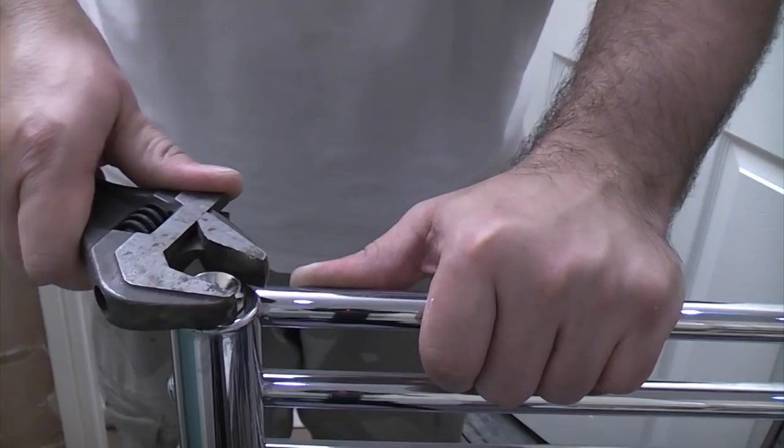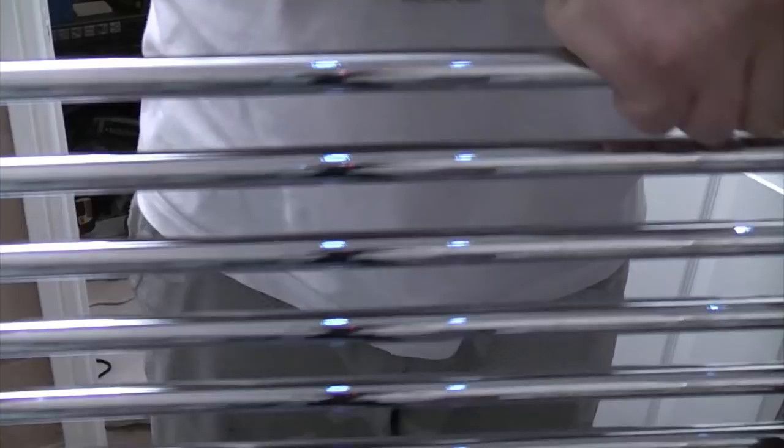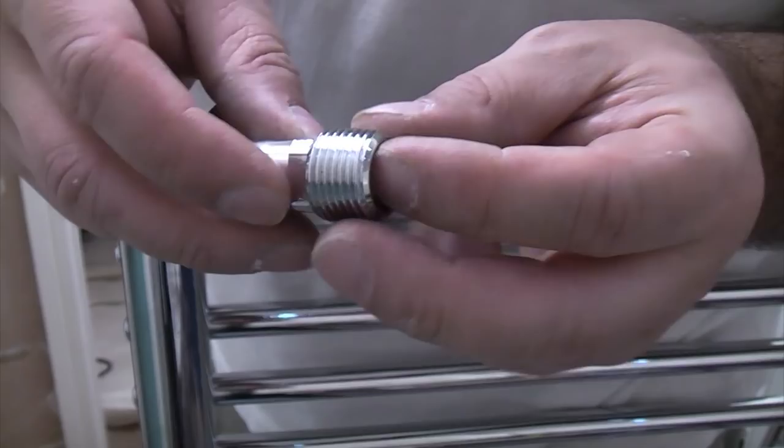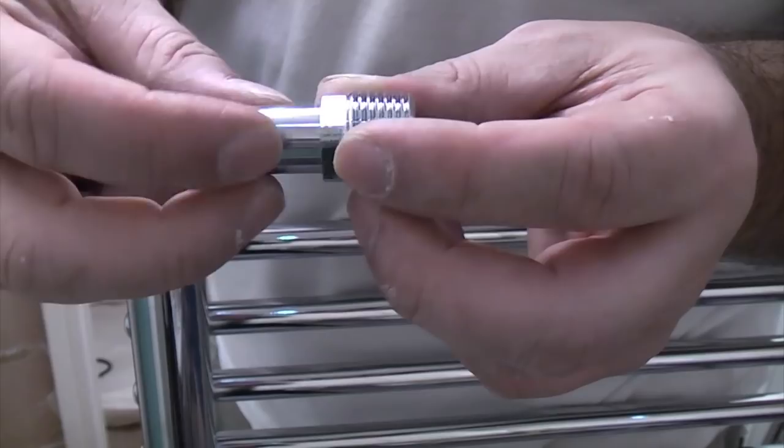So once you've done that you can then turn the radiator over. Now in this end goes radiator tails and often you get these on radiators and you actually need a radiator key which is a large allen key to insert them but this particular one has got flats on it so we can quite easily put those in just using a spanner.